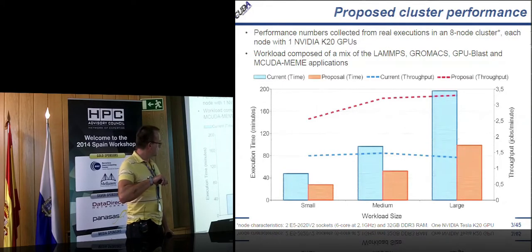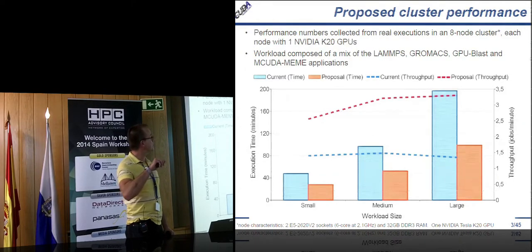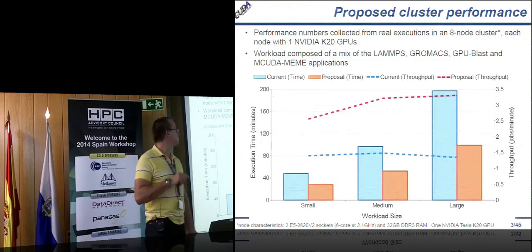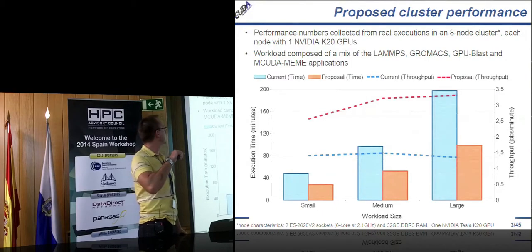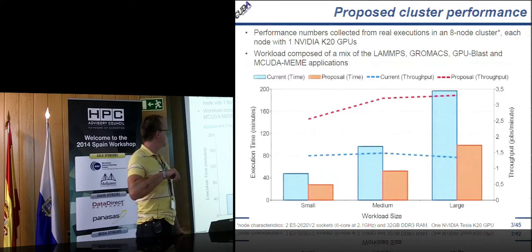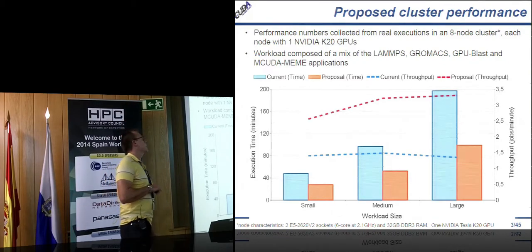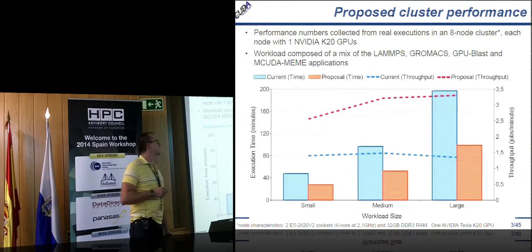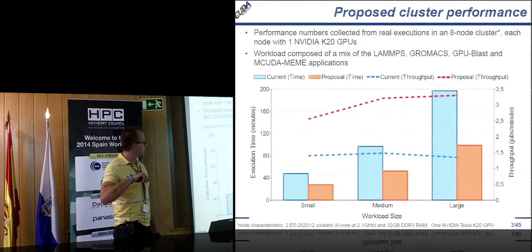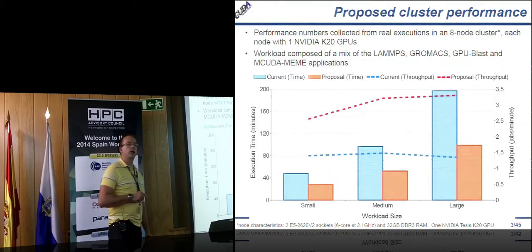With traditional CUDA and SLURM it takes about 200 minutes. What I want to show you is how we moved from that execution time to a much lower one. We are executing exactly the same mix of applications: LAMPS, GROMACS, GPU BLAST, and MCUDA MEME. With CUDA and SLURM we achieve about 1.5 jobs per minute, but with our proposed technology we reduce execution time almost by half and therefore nearly double the throughput.